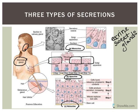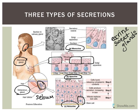The last mode is holocrine secretion — 'holo' meaning whole or entire. With this mode, the entire cell is released with the secretion. This isn't a problem because stem cells at the base continuously divide to replace those cells. The sebaceous gland, associated with hair follicles, is an example. Its secretion, sebum, lubricates and moistens hair, making it more pliable.